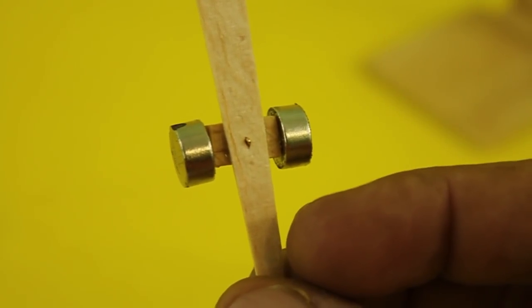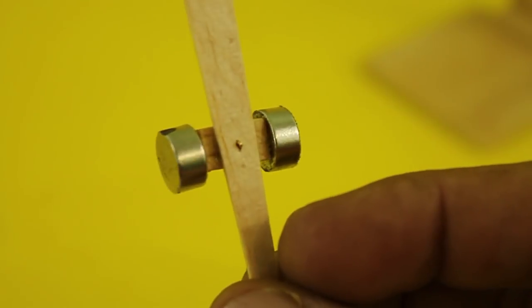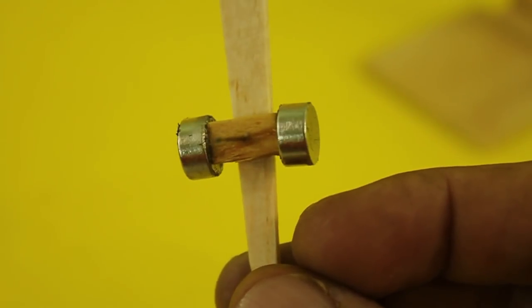This is the indicator needle. It has two neodymium magnets around the axis of rotation.